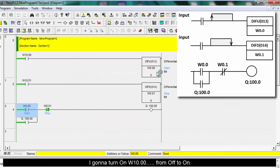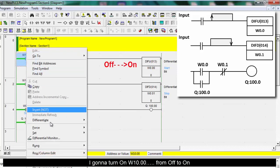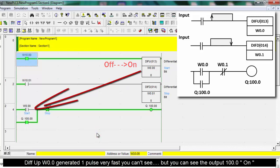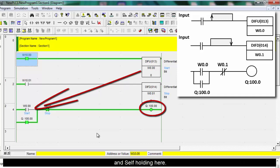I'm gonna turn on W10.0 from off to on. DIFU, the bit 0.0, generates one pulse really fast. You can't see it, but you can see the output 100.0 on and self-holding here.